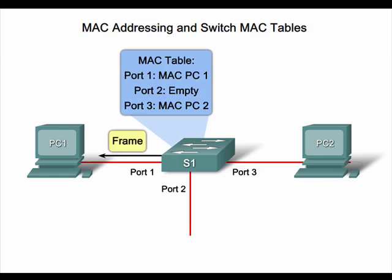Since the switch has now learned the MAC address and associated ports of PCs 1 and 2, if PC1 were to send another message to PC2, the switch would send the frame out the appropriate single port rather than broadcast it out all ports. This is the process that switches use to learn which MAC addresses are connected to specific switch ports.